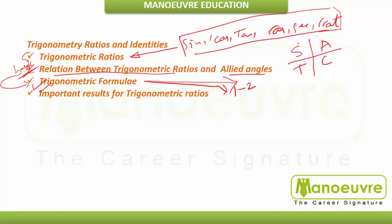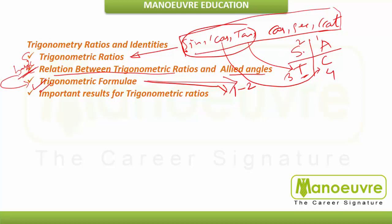In the first quadrant all ratios are positive. 'Smart' stands for Sin, so in the second quadrant sin is positive. 'Trigo' stands for Tan, so in the third quadrant tan is positive. In the fourth quadrant all values of cos are positive. Allied angle questions like 180 plus theta and 180 minus theta also appear in the Trigonometry section.